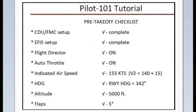Pre-takeoff checklist: CDU FMC setup — complete, checked. FS setup — complete, checked. Flight director — on, checked. Autothrottle — on, checked. Indicated airspeed is V2 plus 15 knots, or 140 plus 15 equals 155 knots — checked. Heading: runway heading of 342 — checked. Altitude: set at 5,000 feet — checked. Flaps: 5 degrees — checked.